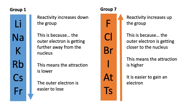For group 1, the reactivity increases down the group because the outer electron is getting further away from the nucleus, meaning the attraction to the nucleus is lower, so the outer electron is easier to lose. Conversely, for group 7, the outer electron is getting closer to the nucleus, so the attraction is higher and it's easier to gain an electron. Fluorine can gain electrons easily because it's small — the attraction to the nucleus is high because its outer shell is close, making it easier to gain an electron. So fluorine is the most reactive halogen.